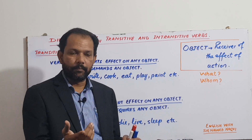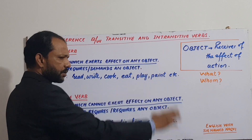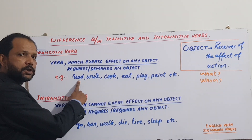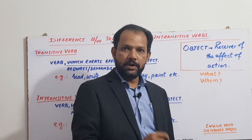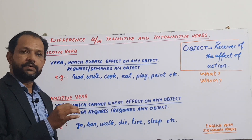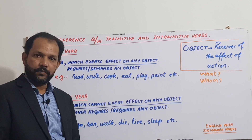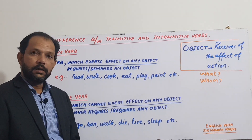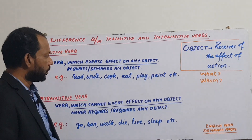There are examples like read, write, cook, eat, play, paint, etc. I am reading a book - reading what? A book - the answer of 'what' is a book. She is writing a letter - writing what? A letter - a letter is the object. She cooked food - cooked what? Food. He eats an apple - eats what? An apple. An apple is the object because it is the answer of 'what'.